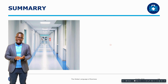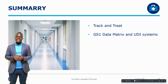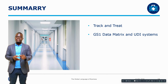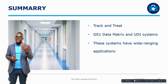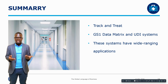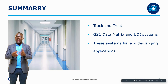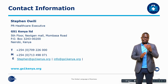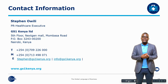To summarize this presentation, the track and treat approach is crucial in enhancing healthcare efficiency and patient safety. The GS1 data matrix and the UDI system play a significant role in ensuring accurate tracking, visibility, and regulatory compliance. These systems have wide-ranging applications, including medication management, surgical instrument tracking, and patient identification. By adopting these standards, healthcare providers can significantly improve their operations and patient care. For further information, please feel free to reach out using the contact details provided in this slide. We are here to assist you and provide any additional information you may need. Thank you for your attention and participation, and I hope you found this presentation informative and useful.